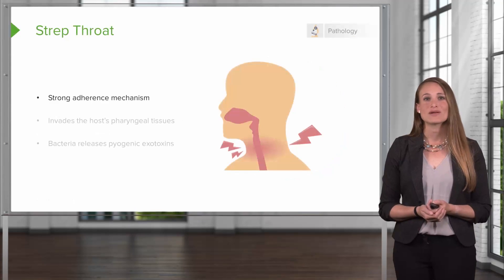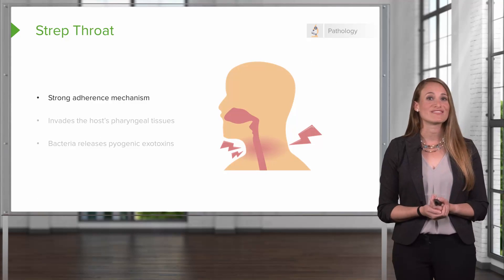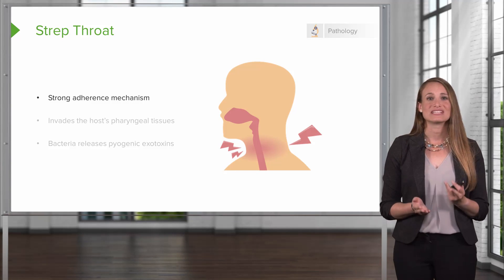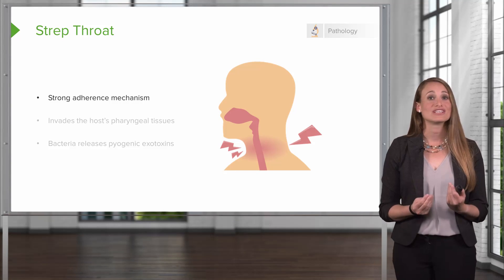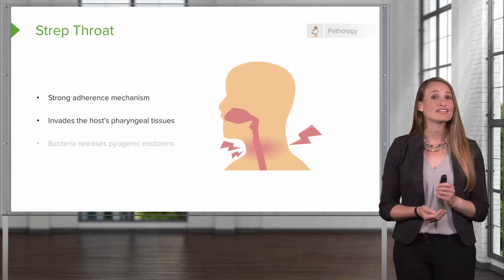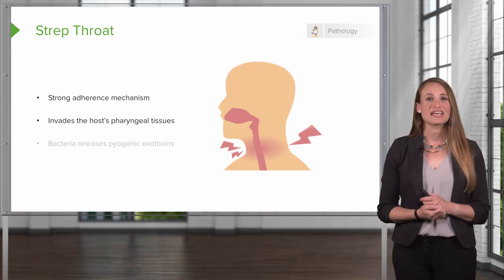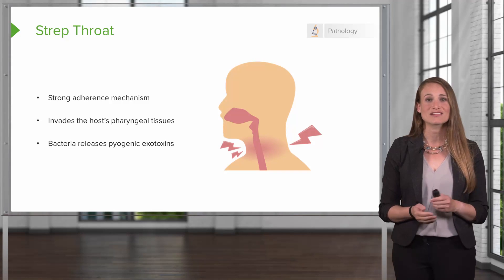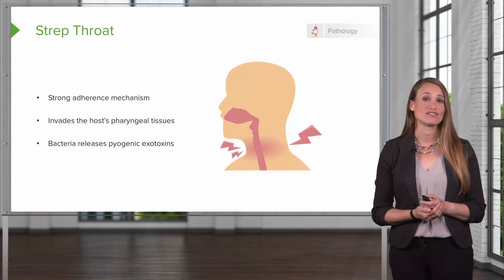The strep bacteria adheres to specific receptors on the host cells, particularly the pharyngeal and dermal epithelial cells, and then begins to invade the host tissues. The bacteria then releases pyogenic exotoxins, which will cause the patient a fever.